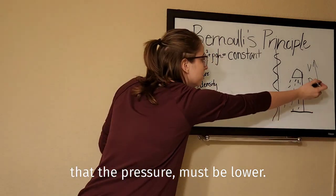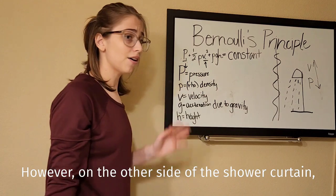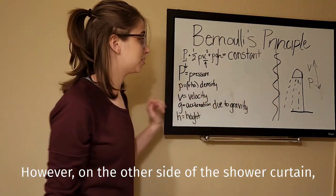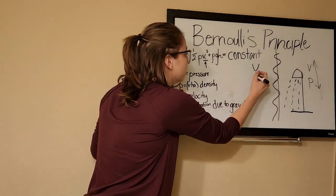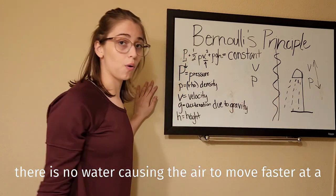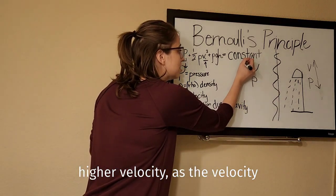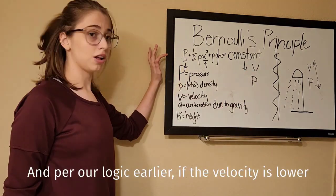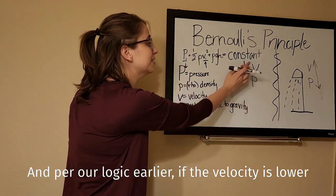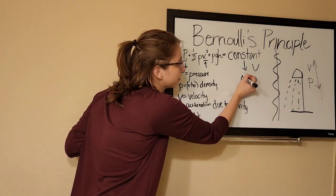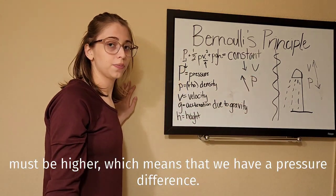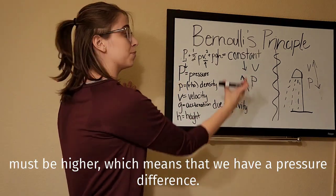However, on the other side of the shower curtain, there is no water causing the air to move faster at a higher velocity. So the velocity on this side is lower, and per our logic earlier, if the velocity is lower, then the pressure must be higher, which means that we have a pressure difference.